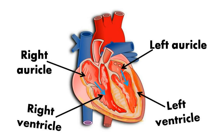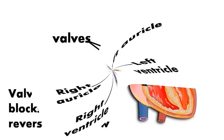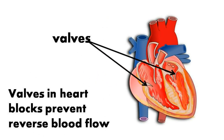Blood is pushed into the ventricle — right atrium to right ventricle, left atrium to left ventricle. Then the ventricle contracts and blood is pushed into the arteries, then blood flows through the arteries to different parts of the body. Now the question: why can't blood return to the auricle when the ventricle is contracting? There are valves between auricles and ventricles — these are like doors